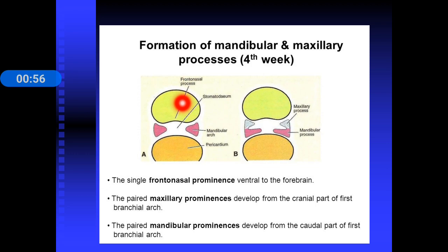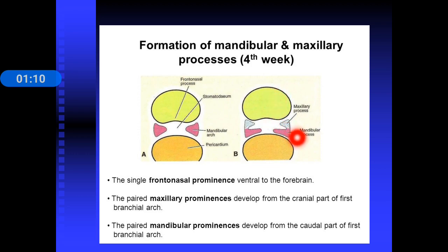This is the frontonasal prominence and this is the mandibular arch, or the first pharyngeal arch. The frontonasal prominence remains the same while the mandibular arch gives rise to the maxillary process and the mandibular process. The paired maxillary prominences develop from the cranial part of the first branchial arch, and the paired mandibular prominences develop from the caudal part, otherwise known as the mandibular arch. This happens around the fourth week of intrauterine life.